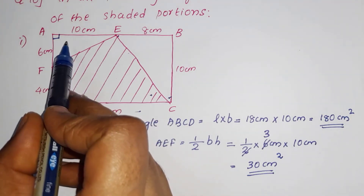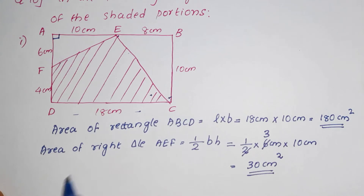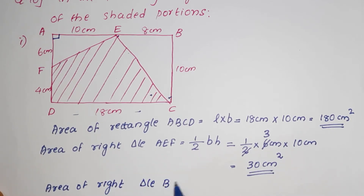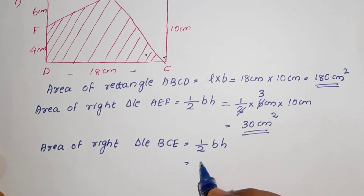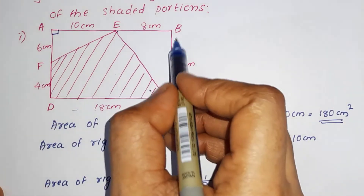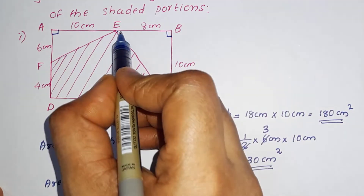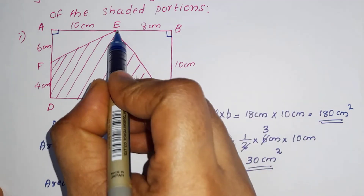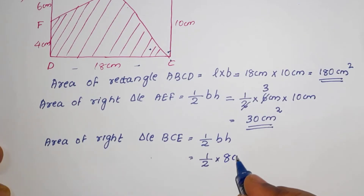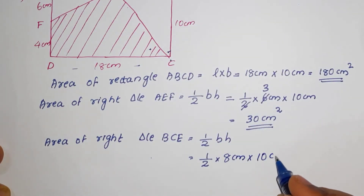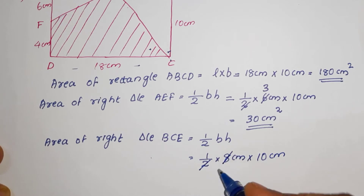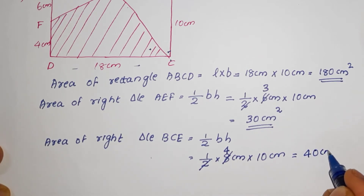Now we find the area of the second triangle. Area of right-angled triangle BCE is equal to half BH, equal to half into base EB into height BC. Base EB is 10 centimeters and height BC is 10 centimeters. Half into 10 into 10 — canceling 2 gives 4 into 10, which equals 40 centimeter square.